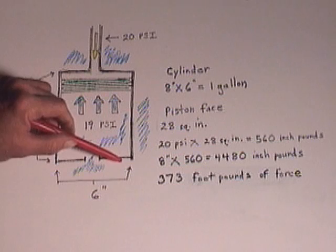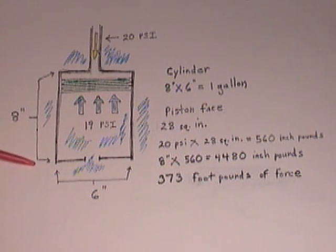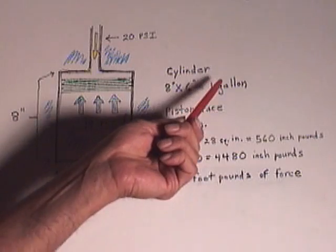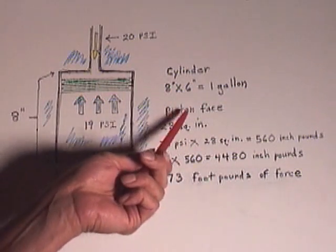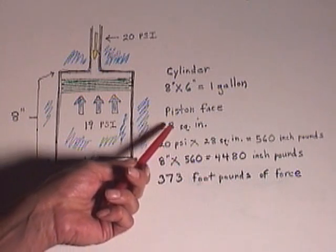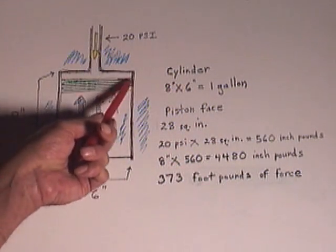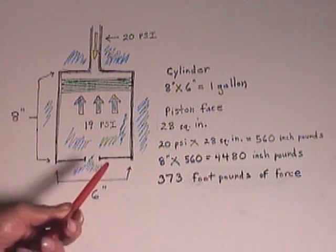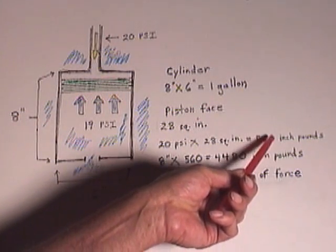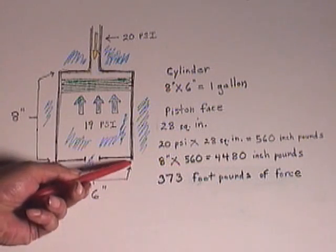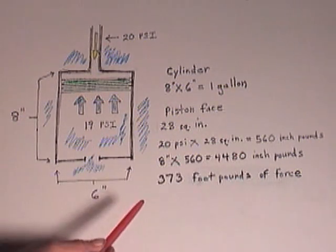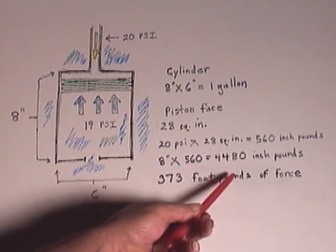Now this cylinder is 8 inches long and 6 inches in diameter. A cylinder 8 inches by 6 inches equals 1 gallon. The piston face is 28 square inches. Now 20 pounds per square inch times 28 square inches is 560 inch pounds. The 8 inches that has to be driven down times the 560 equals 4,480 inch pounds. That's equal to 373 foot-pounds of force.